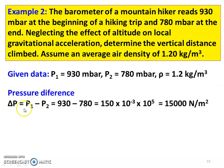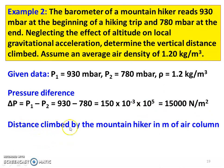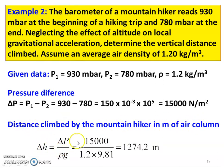Pressure difference: delta P = P1 minus P2 = 930 minus 780 = 150 millibar. Converting: 150 × 10⁻³ bar × 10⁵ N/m² per bar = 15,000 Newton per meter square. Distance climbed by the mountain hiker: using the equation P = ρgH, so delta H = delta P divided by rho × g = 15,000 divided by 1.2 × 9.81 = 1,274.2 meter.